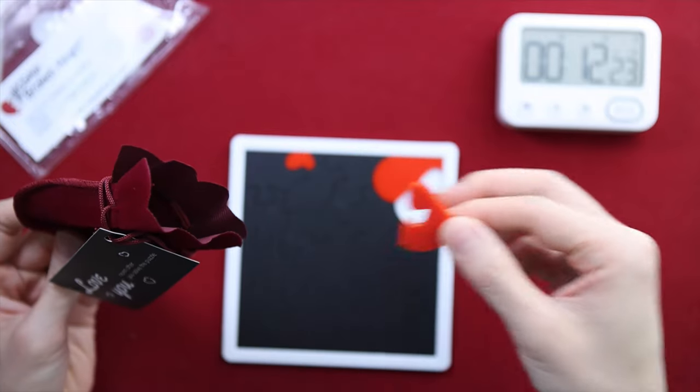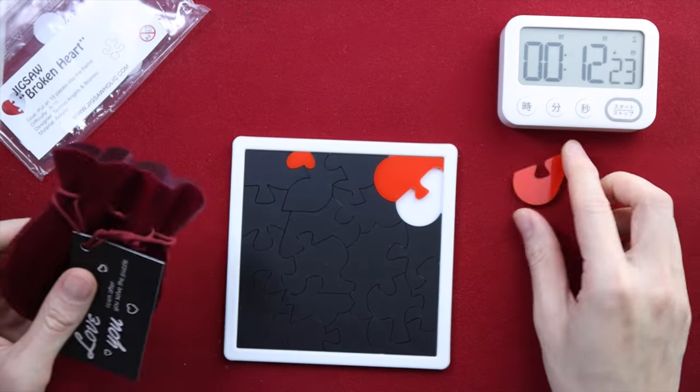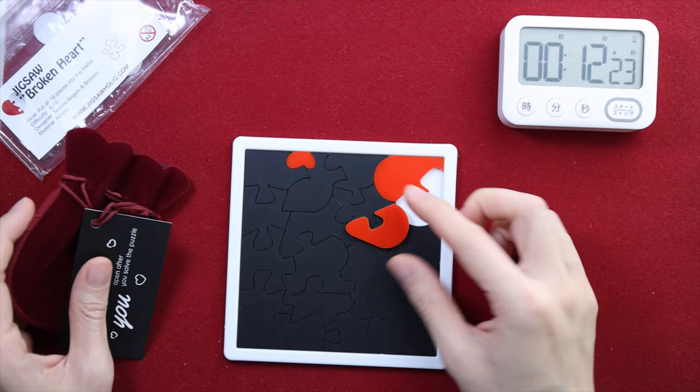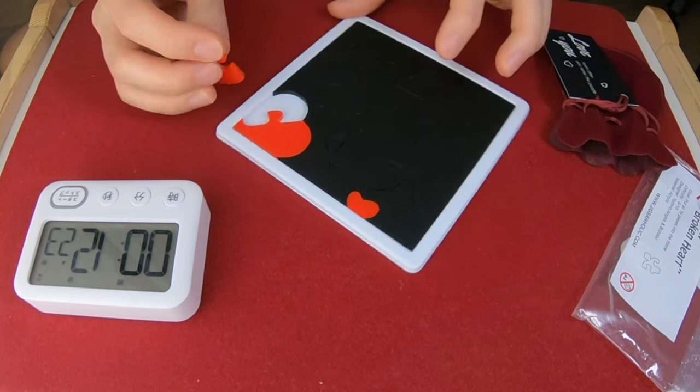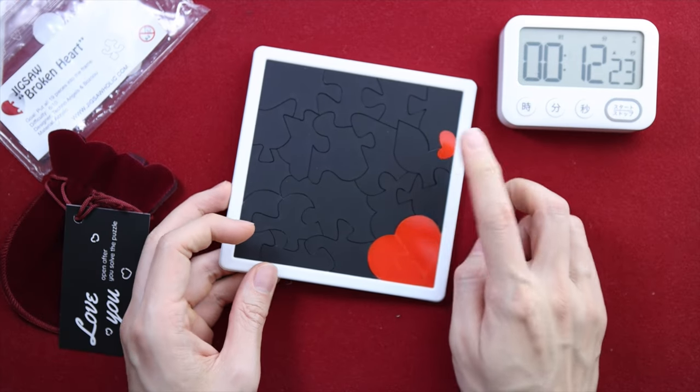In this velvet bag, it should be the remaining piece of the heart. And yep, that's it. Nothing else in the bag. And this piece should fit perfectly here. Yep, so this is the final piece of the puzzle, completing the heart.